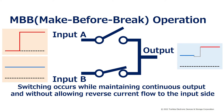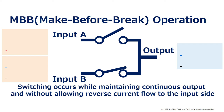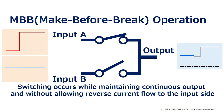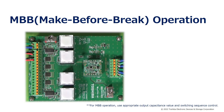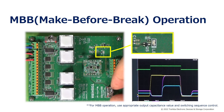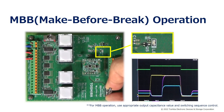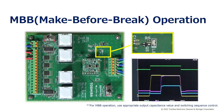During MBB — that is, make before break operation — switching occurs while maintaining continuous output and without allowing reverse current flow to the input side. This is generally called an ideal diode. The board is set to MBB mode and switching operation is performed. It can be seen that the switching operation is performed without turning off the output.